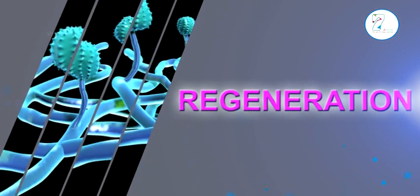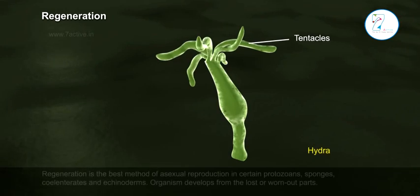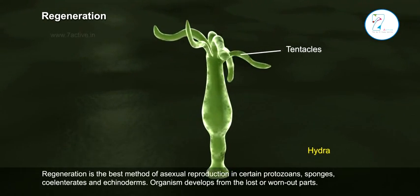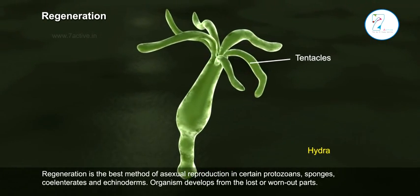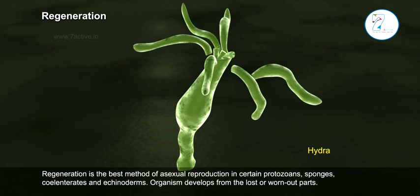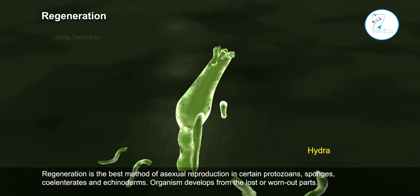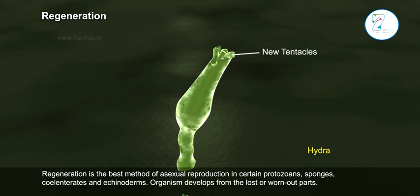Regeneration is the best method of asexual reproduction in certain protists, sponges, cnidarians, and echinoderms.